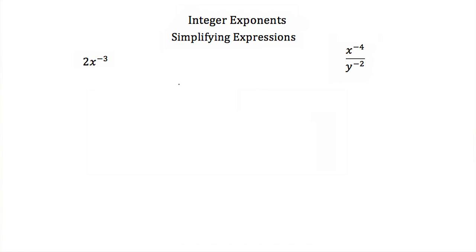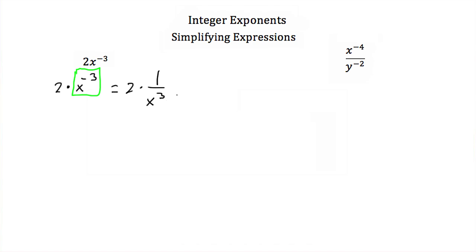Now let's see how we can use these rules to simplify expressions. Here we don't have any values for x or y, but we want to rewrite with positive integer exponents. So if we have 2 times x to the minus 3, and remember, when you have a negative exponent that term goes in the denominator, this is the same as 2 times 1 over x cubed, or 2 over x cubed.